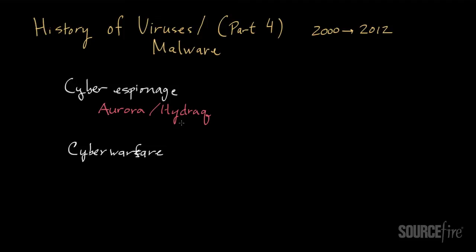What was really interesting from the perspective of external perception is that up until this point malware had gone through an initial phase of notoriety, then moved into profitability, and now cyber espionage represents the next level. This area is not entirely new — malware has been used for these purposes for quite some time. Aside from Aurora and Hydrak, there was also an attack on RSA that got a lot of attention, attacks on the oil and gas industry and petrochemicals, and others with names like Night Dragon and Shady Rat.